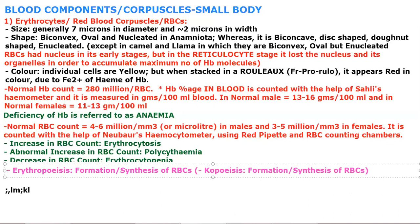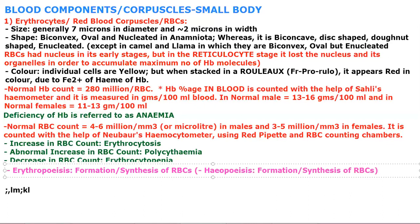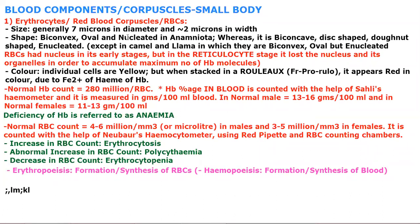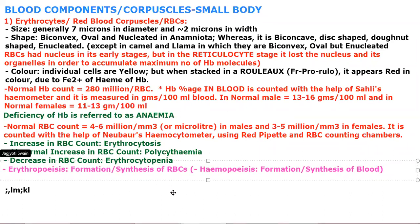Taking a broader range, hemopoiesis includes everything. Hemopoiesis means the formation of blood — so hemopoiesis includes all blood cell formation, of which erythropoiesis is the formation of RBCs specifically.